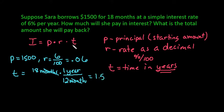When you are using this formula, time always has to be in years. Your rate always has to be as a decimal. And the principal is just your starting amount.